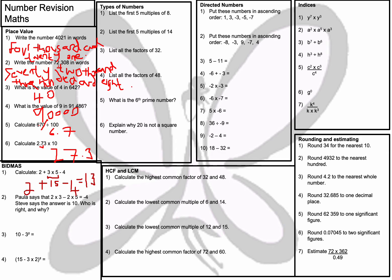Question number 2: Paula says that 2×3 − 2×5 equals −4. Steve says the answer is 10. Who is right and why? Using BIDMAS — Brackets, Indices, Division, Multiplication, Addition, Subtraction — we do the multiplying first. So 2×3 is 6, then 2×5 is 10, and 6 subtract 10 is negative 4. Paula is correct.